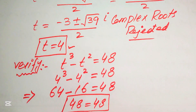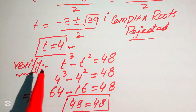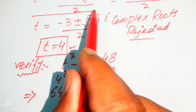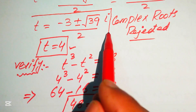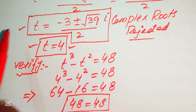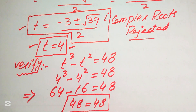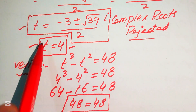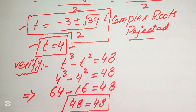If the question asks for all roots, then consider the two complex roots and the one real root — three roots in total. If only real roots are required, then t equals 4 is the final answer. Thank you for watching this video; please subscribe to my channel for more exciting videos.